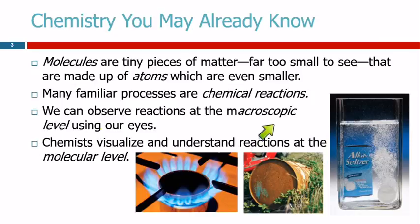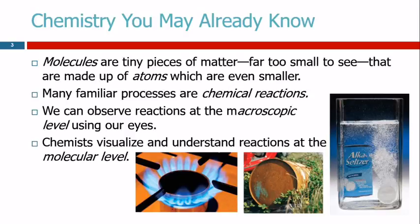We talk about a macroscopic level and a molecular level. A macroscopic level — looking at something — is stuff you can see with your eyes. There's also a microscopic level, which would require the use of a microscope. If you want to see the individual cells in the leaf of a plant, you'd have to use a microscope. But chemists look at a lot of things on the molecular level. We're studying and trying to understand on the level of those teeny tiny particles. That's what chemists do.